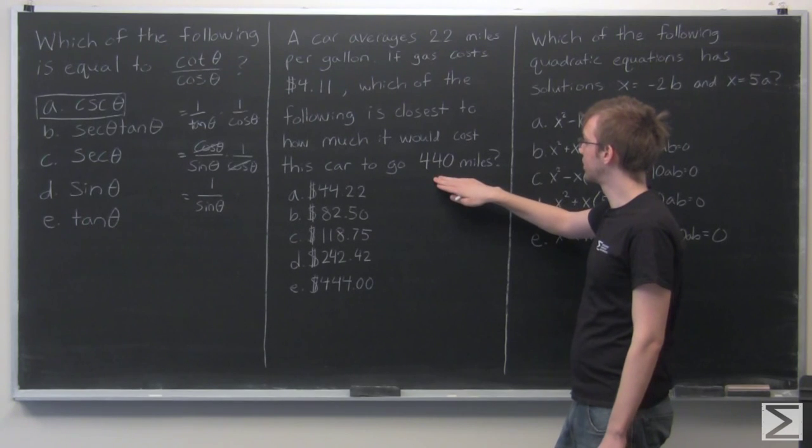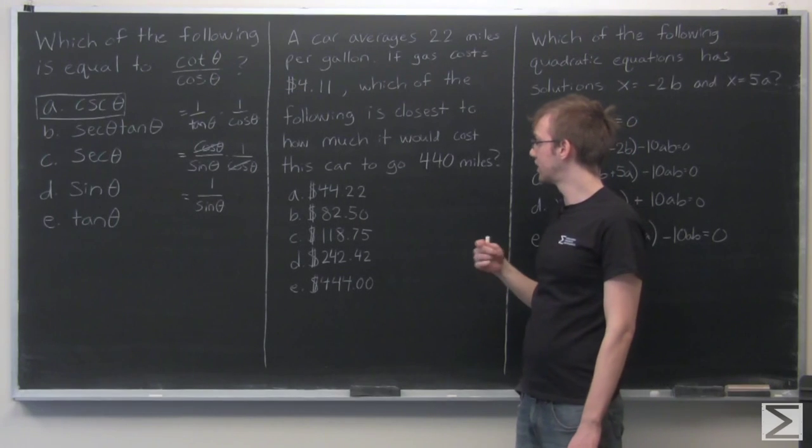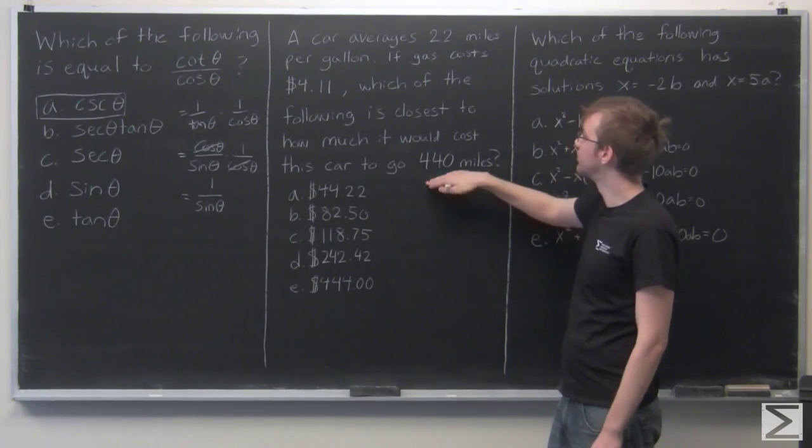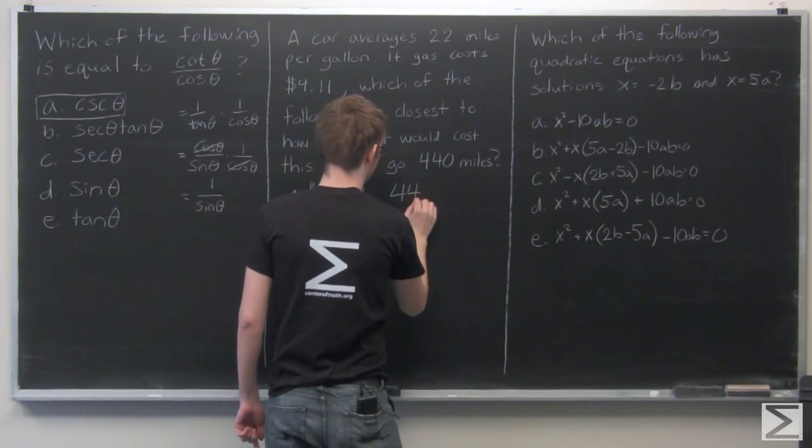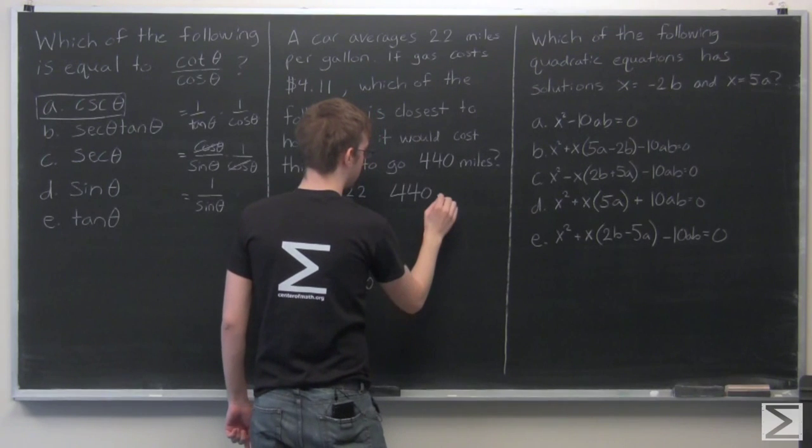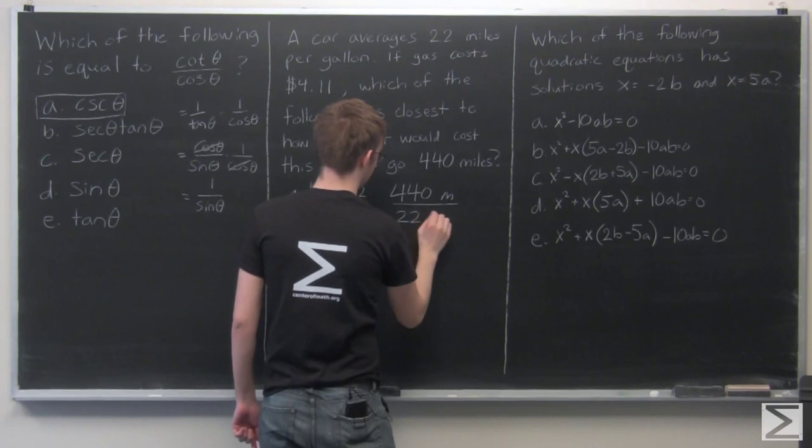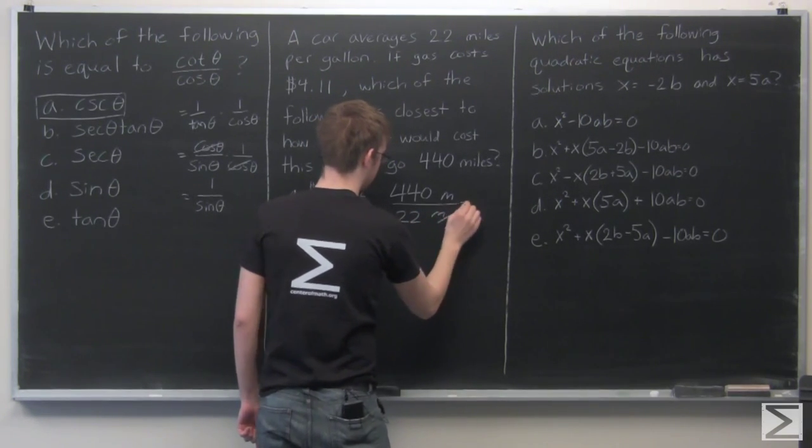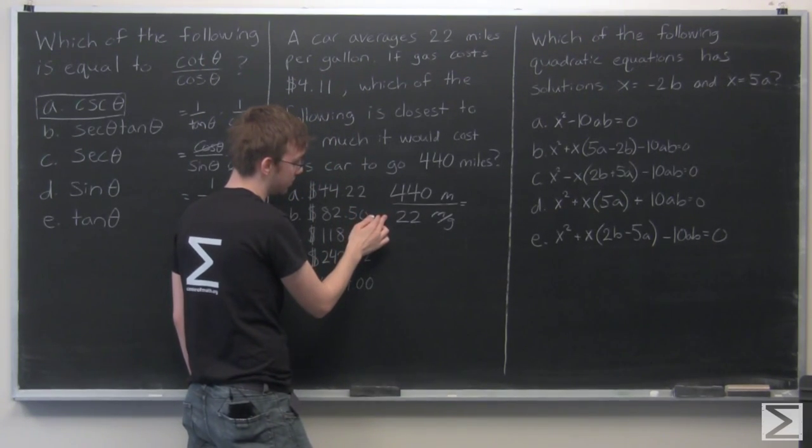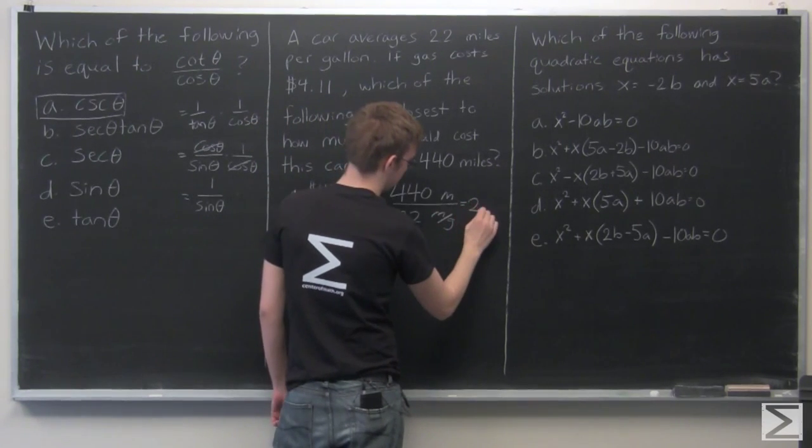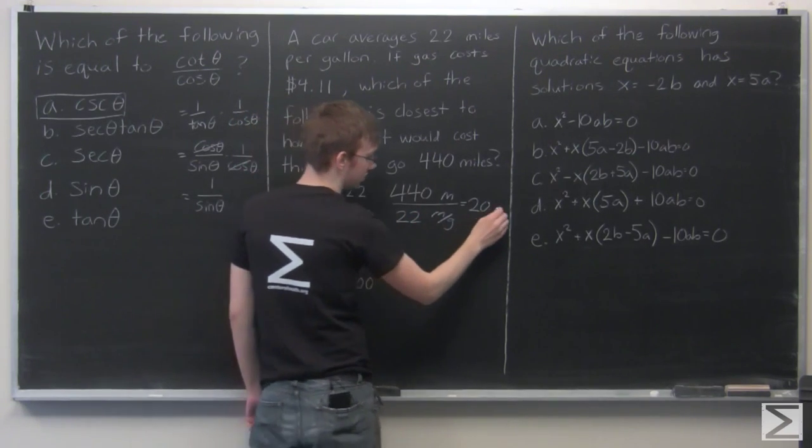But if we want to go 440 miles and the car gets 22 miles per gallon, to figure out how many total gallons we need, we need to divide 440 by 22. So that's 440 miles over 22 miles per gallon. And these are fairly easy numbers to divide. 440 divided by 22, that's going to equal 20. And here, miles divided by miles per gallon is just equal to gallons.